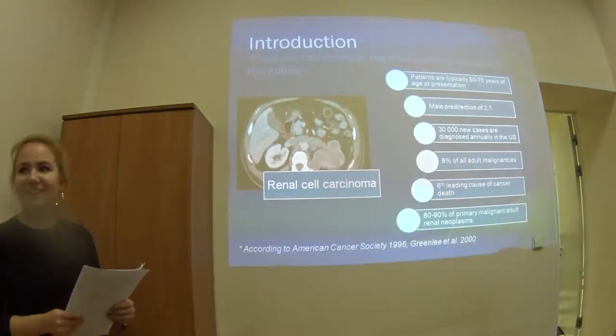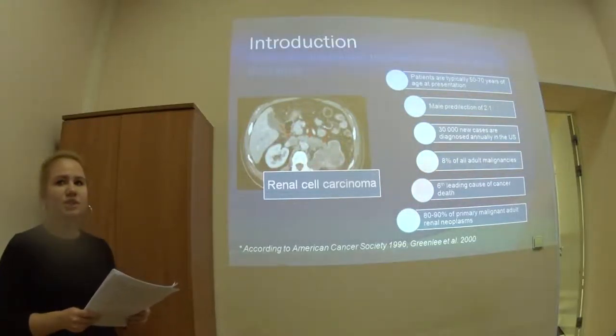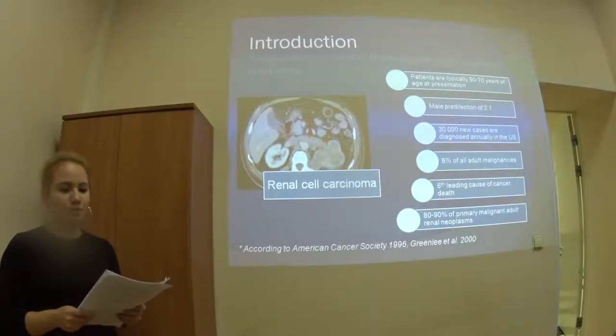First I want to say some words about renal cell carcinoma. You can also know it as renal adenocarcinoma, Grawitz tumor, or hypernephroma. It's a primary malignant adenocarcinoma derived from the renal tubular epithelium and the most common neoplasm of the kidney, which takes about 90-95% of all renal tumors.